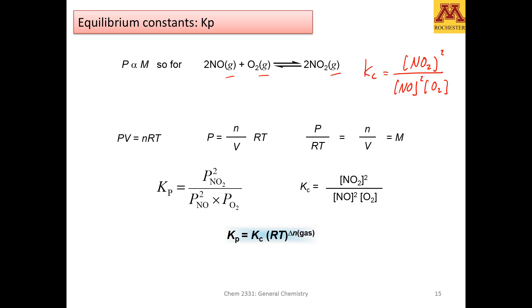you will see that we can write the equilibrium constant not as a function of concentration, but as a function of pressure. That's what we call Kp. Kp is the equilibrium constant as a function of pressure, Kc is the equilibrium constant as a function of concentration.